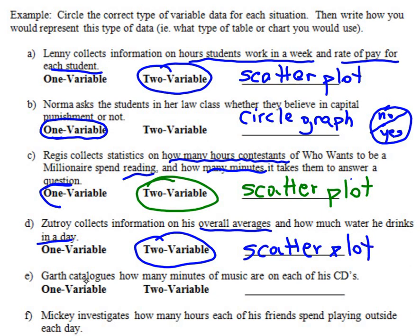And the last one that we're going to do is Garth categorizes how many minutes of music are on each of his CDs. Now is this information that we can find median, average, a mode for? And the answer is yes, yes we can. So this is one variable that we could use in one variable data. So how can we demonstrate it? What kind of graph can we use? Definitely a histogram and depending on how many CDs he has, maybe a bar graph.